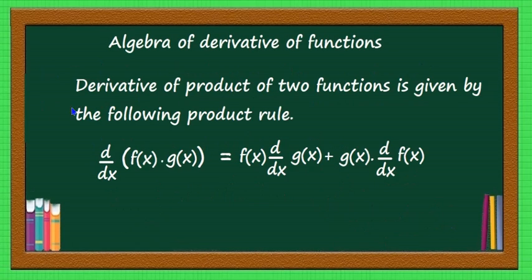The third rule is the derivative of a product of two functions, given by the product rule. That is, d by dx of f of x into g of x equals f of x into d by dx of g of x, plus g of x into d by dx of f of x. When a product of two functions is given, you should apply this rule.